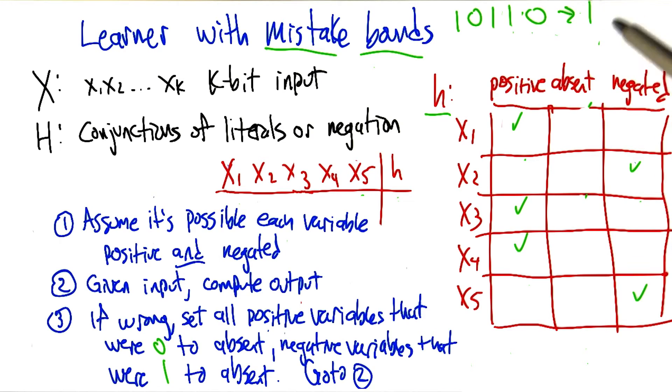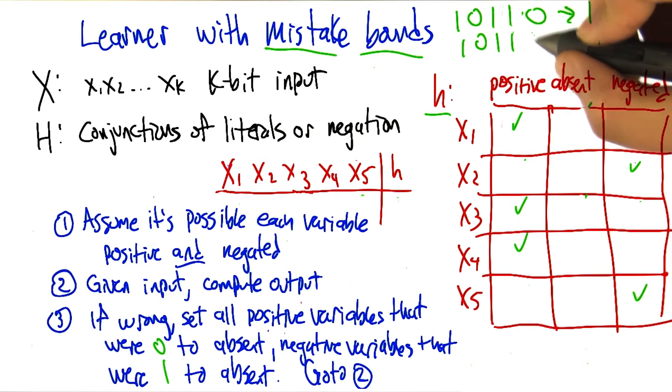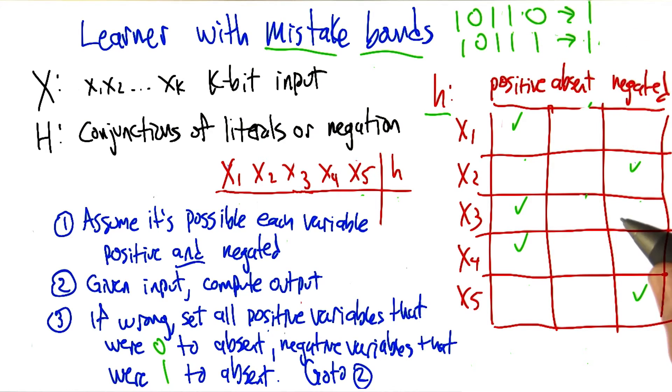But let's, so it's going to guess no everywhere else. And so let's say it gets something wrong again, let's say it gets 10111 wrong. So in this particular case, it's going to guess no, and we say, I'm sorry, the answer is yes.